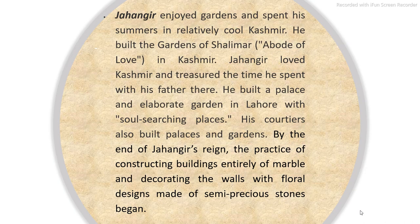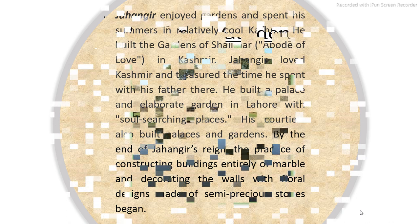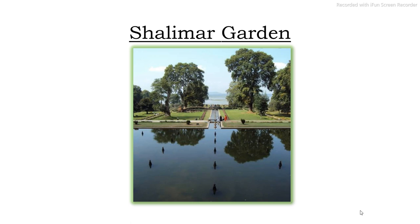Coming to the next ruler, Jahangir — Jahangir enjoyed gardens and spent his summers in relatively cool Kashmir. He built the gardens of Shalimar in Kashmir. He loved Kashmir and treasured the time he spent there, also building a palace and elaborate garden in Lahore. His courtiers also built palaces and gardens. By the end of Jahangir's reign, the practice of constructing buildings entirely of marble and decorating the walls with floral designs made of semi-precious stones began. This is the Shalimar Garden in Kashmir.